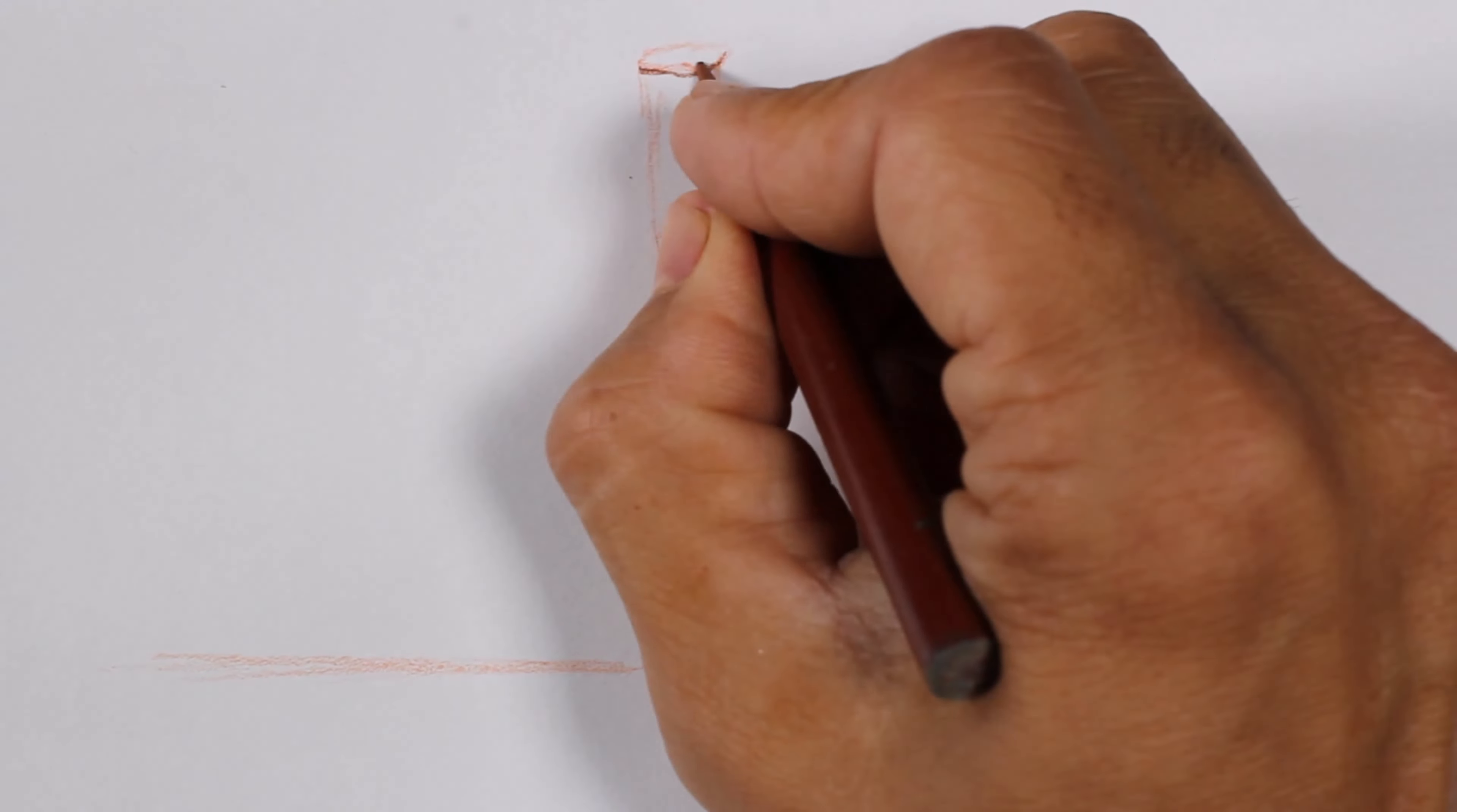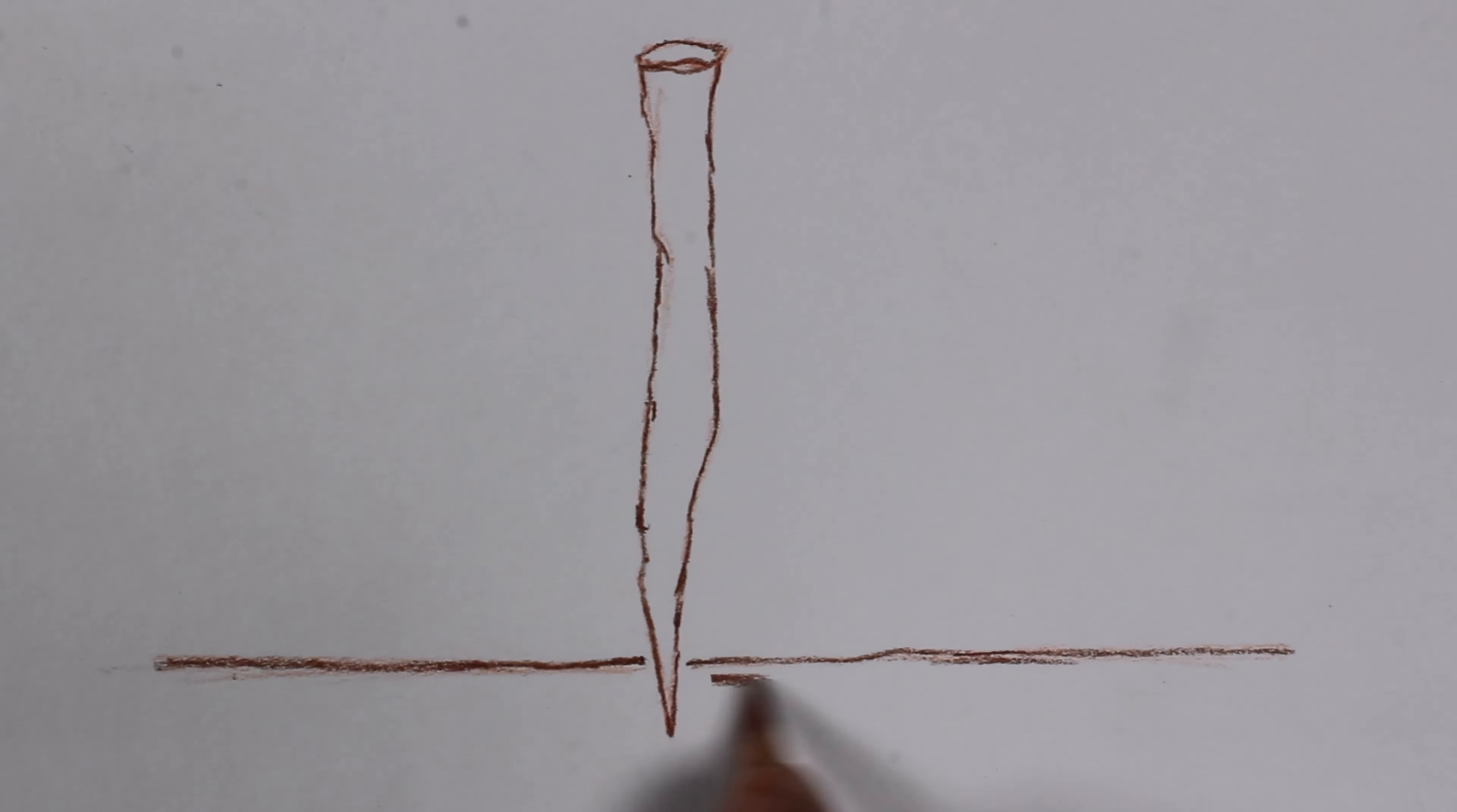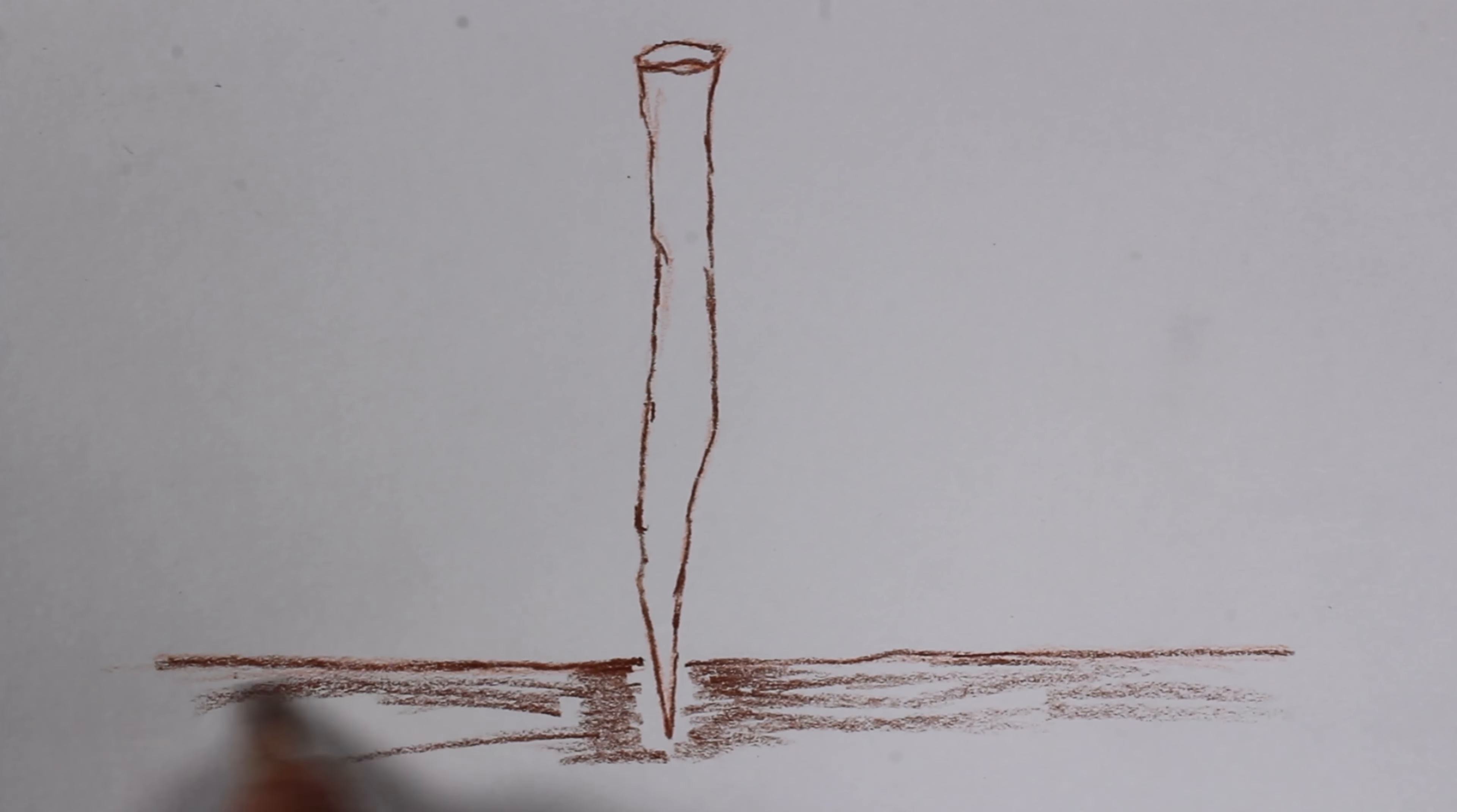After peach we will use sienna brown to darken our outline. We will start to fill in the area at the bottom to represent the soil.